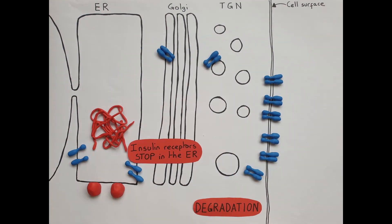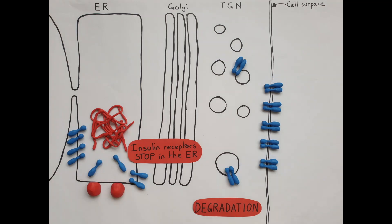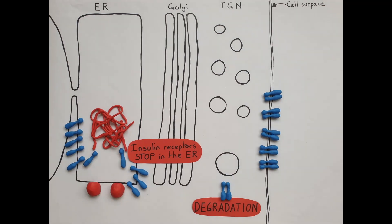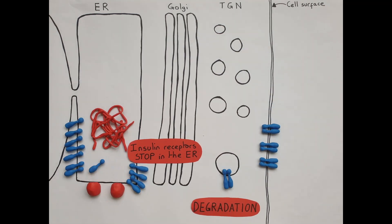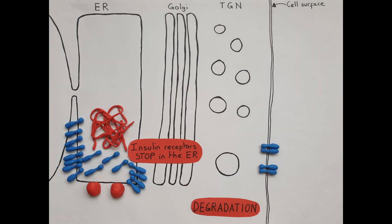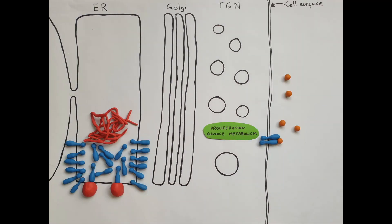Transport of insulin receptors from the ER to the cell surface stops but degradation continues. This imbalance of production and removal depletes the receptor at the cell surface so the response of cells to insulin diminishes.